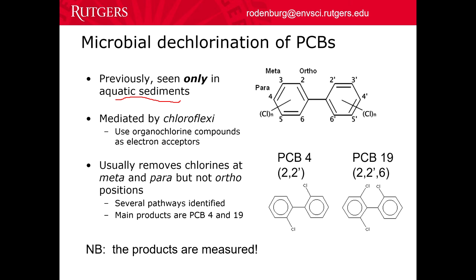We knew from microcosm studies that bacteria can dechlorinate PCBs, and we have one field site where this has definitely been shown — the upper Hudson River, where in the aquatic sediments bacteria were dechlorinating the PCBs. We know based on these studies that there are different types of bacteria that can mediate this — one of them is the chloroflexi. They use these organochlorine compounds as their electron acceptor. Right now I'm talking about PCBs, but in a few minutes I'll talk about dioxins, chlorinated ethylenes, chlorinated benzenes, and even brominated flame retardants. All of these halogenated compounds can be used as electron acceptors by the bacteria.